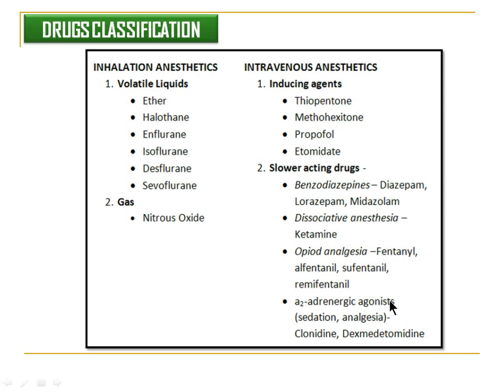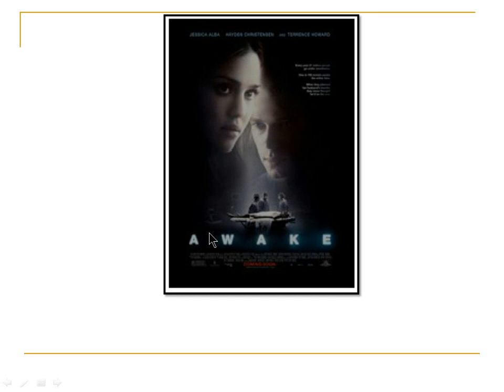Similarly, alpha-2-adrenergic agonists also act as slower-acting intravenous anaesthetics, and include drugs like clonidine and dexmedetomidine.